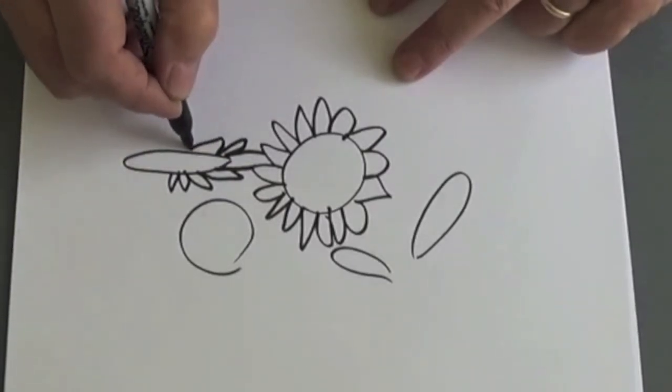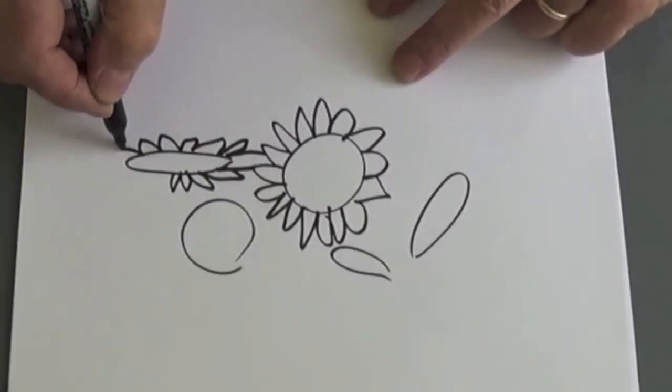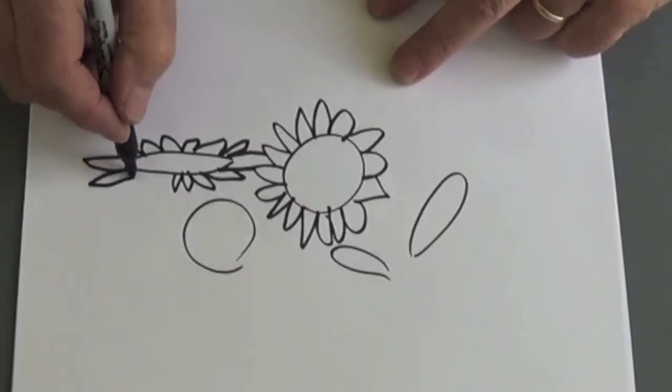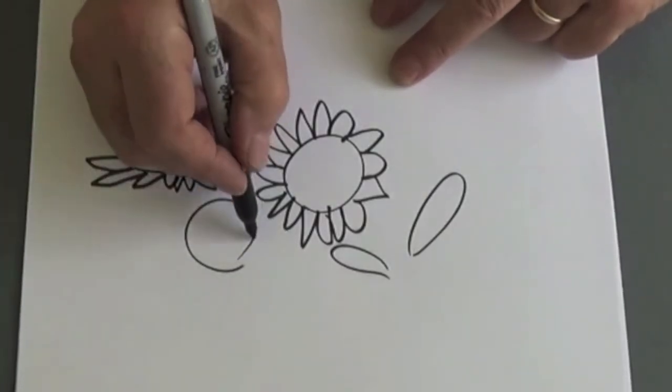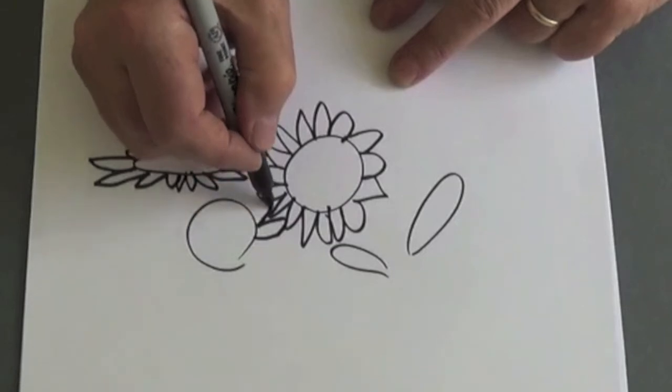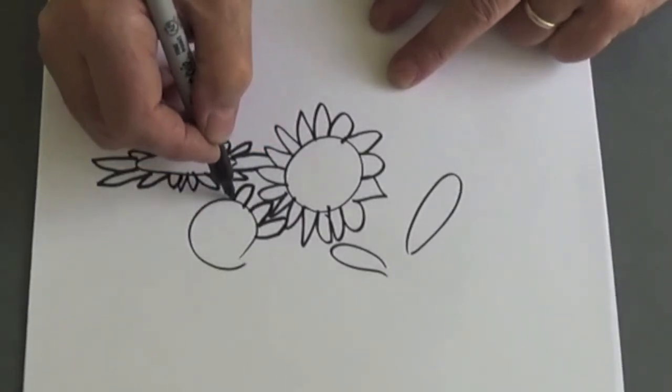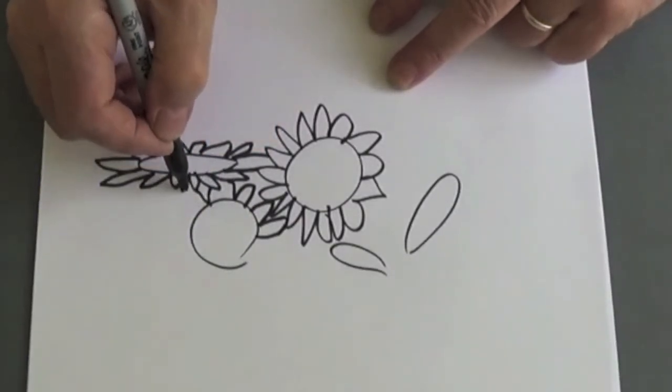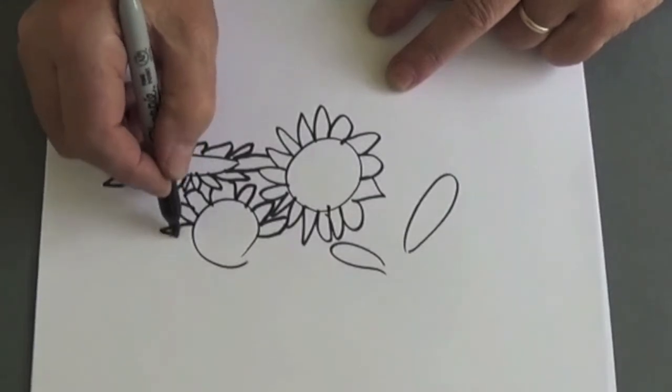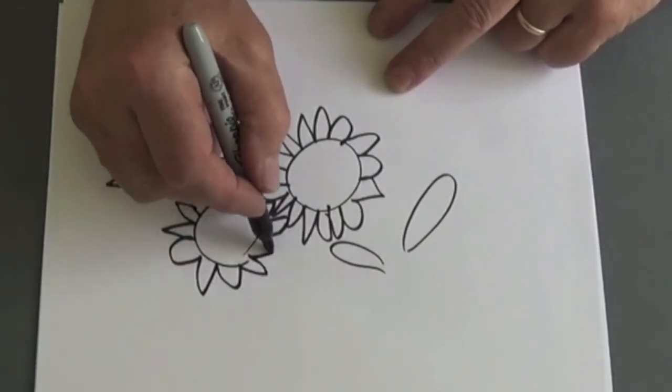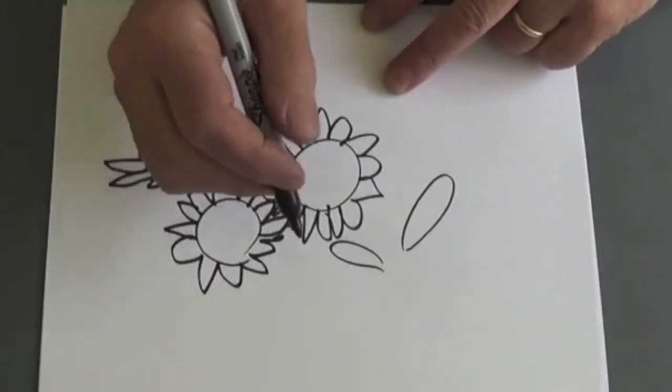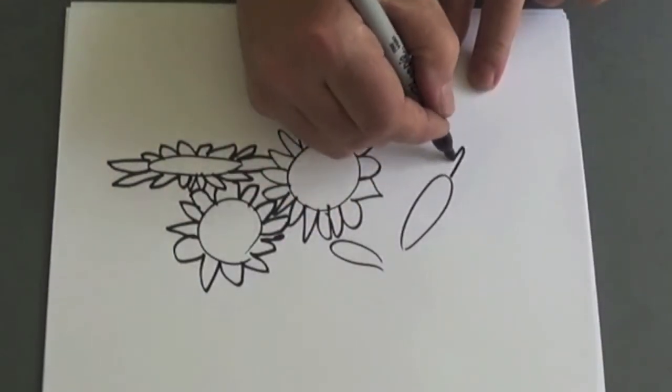You'll notice these all look the same, but these ones will be foreshortened. Oh, gotta hop over there. See, foreshortened. And these ones would be round, so there's lots of hopping over. You're hopping over other flowers. If you don't do that, all your flowers will look isolated.